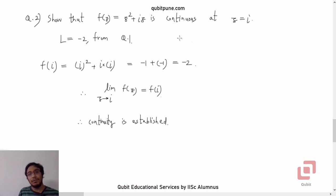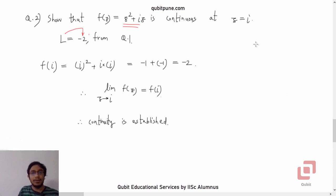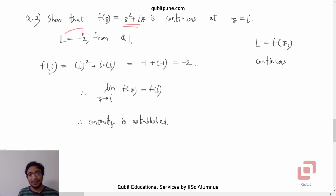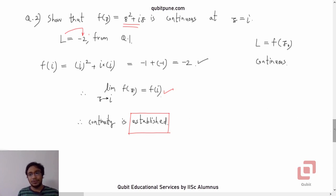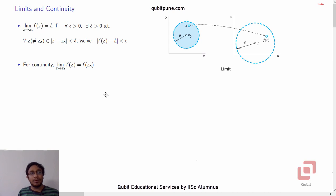Question 2: show that f(z) = z² + iz is continuous at z = i. We have already proved that the limit is −2 using the definition. Recall the definition of continuity: when the limit equals the value of the function at that point, the function is continuous. Calculate f(i): i² + i·i = −1 + (−1) = −2. The condition for continuity is satisfied — the limit of f(z) as z → i equals the value of the function at z = i. Just as polynomials are continuous in the real domain, so are polynomials continuous in the complex domain.